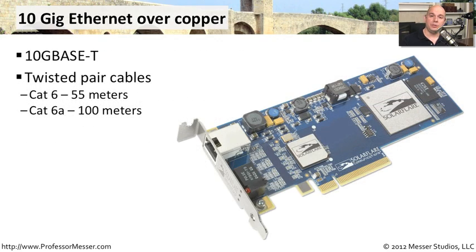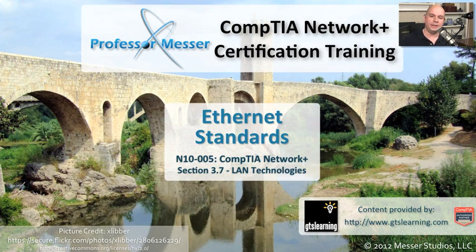You may not be using fiber to send 10GB connections. There is a standard for 10-gigabit Ethernet over copper twisted-pair cables. If you have a Cat 6 cable, you can go as far as 55 meters. And if you have Cat 6A, you can go as far as 100 meters with your 10GBaseT.